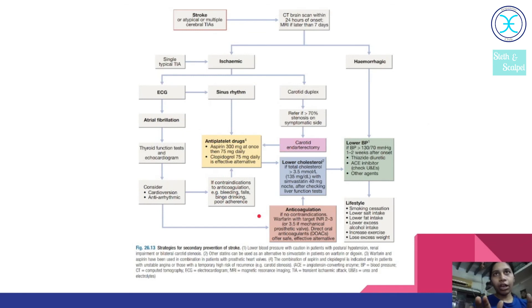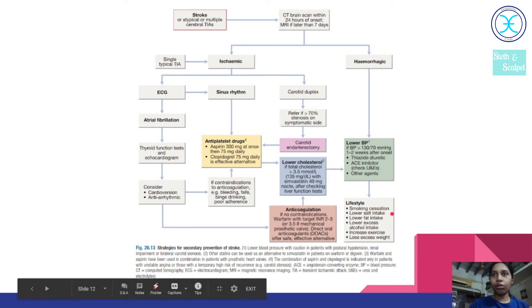See, this is the basic layout for stroke management. Stroke, after doing a CT, we rule out hemorrhagic type and then come out to ischemic. Ischemic, then we do ECG. We look out for the cause of where the origin of thrombi or emboli is present. If there is sinus rhythm, we go for an antiplatelet drug. If it is AFib, we then do thyroid function test and an echo, and then we do cardioversion or antiarrhythmic, and then we again go for antiplatelet drug. And then after doing ECG, we have to do a carotid duplex. We look for stenosis, degree of stenosis of the carotid artery. If the degree is more than 70%, we do a carotid endarterectomy. After that, we administer antiplatelet drug, mainly aspirin. And then we do other supportive measures like lowering of the cholesterol, lowering of the BP, and then lifestyle modification like smoking cessation, lower salt intake like that.